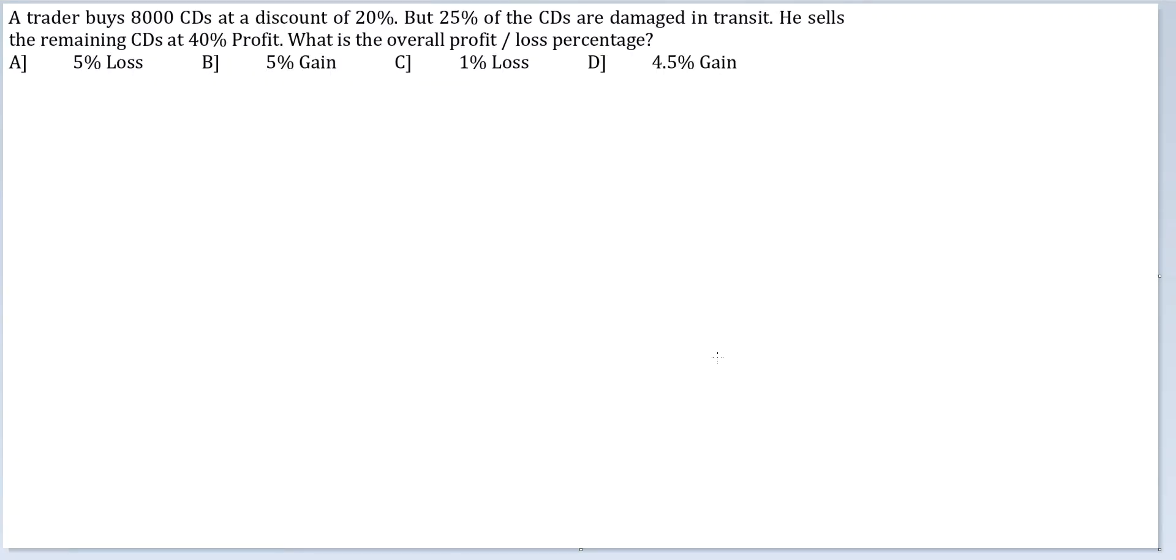Let's look at this question: A trader buys 8000 CDs at a discount of 20%, but 25% of the CDs are damaged in transit. He sells the remaining CDs at 40% profit. What is the overall profit or loss percentage?